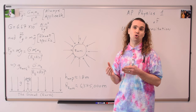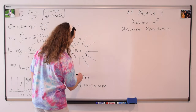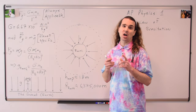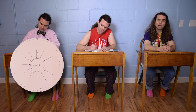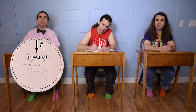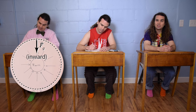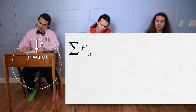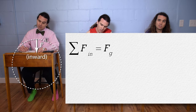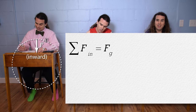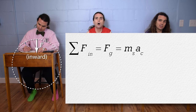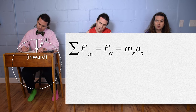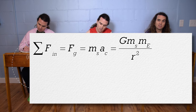Let's take a look at a satellite in orbit around planet Earth. How would you solve for the linear velocity of the satellite? The satellite is moving in a circle, so we need to sum the forces in the inward direction. Before we can do that, we need to draw a free body diagram of the forces acting on the satellite. The only force acting on the satellite is the force of gravity caused by the Earth. The net force in the inward direction equals the force of gravity, which is positive because it's in the inward direction. The net force equals the mass of the satellite times the centripetal acceleration. We can substitute big G times the mass of the satellite times the mass of the Earth, all divided by r squared.